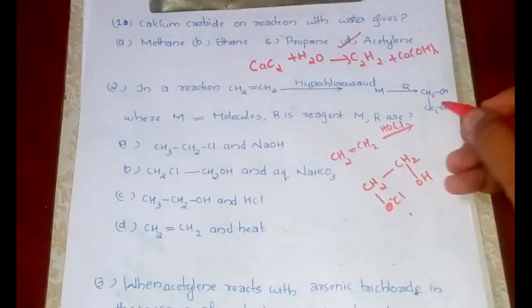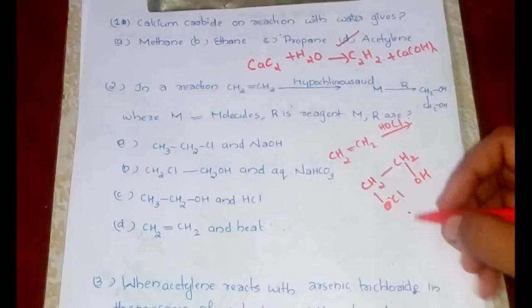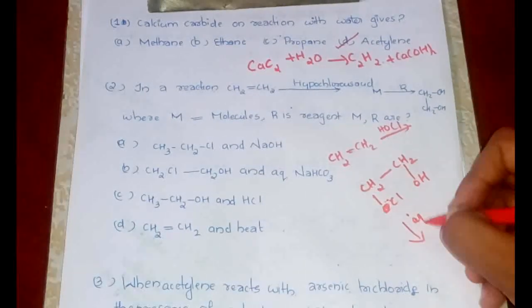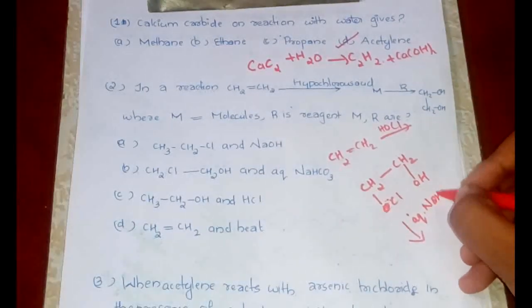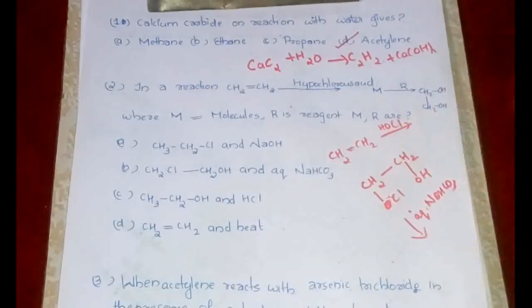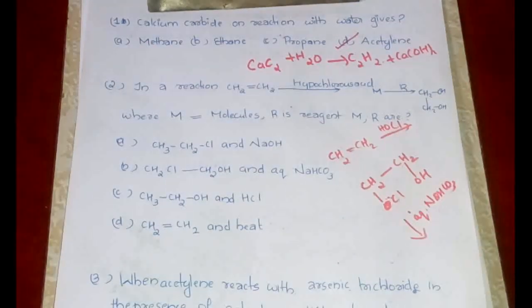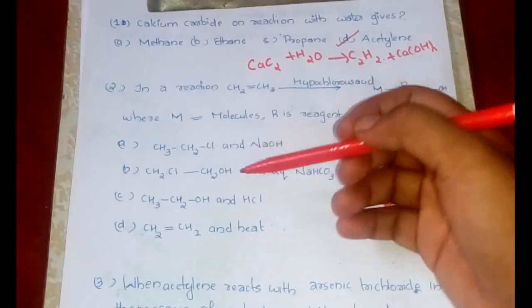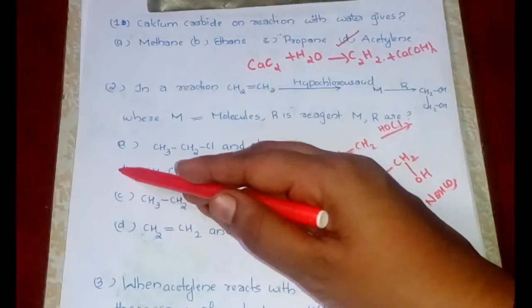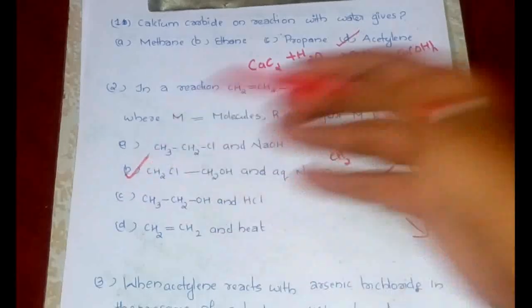Further, if it has to form the glycol, it should react with aqueous NaHCO3. Only then this Cl will be replaced by OH. Therefore, the combinations are correctly said only in option B, and therefore that would be our answer.